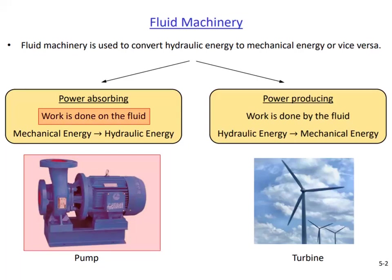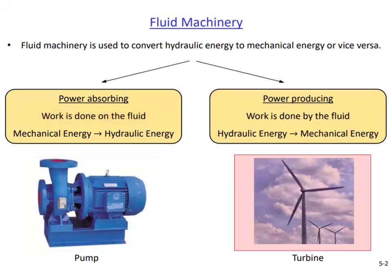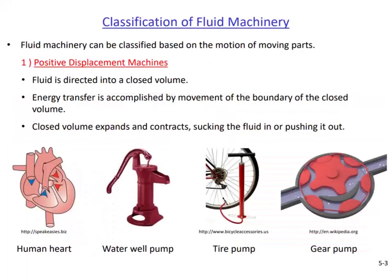Work is done by a rotating shaft on the fluid to increase its pressure — mechanical energy is converted into hydraulic energy. A wind turbine works in the opposite way: it is a power producing device. Kinetic energy of the blowing wind is converted into mechanical energy, used to rotate a shaft which then produces electricity. Fluid machines can be of two types: positive displacement machines and turbo machines.